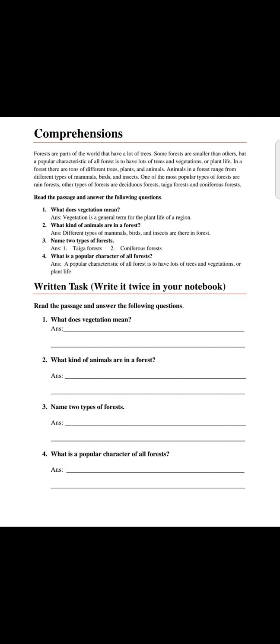After reading this passage you will be able to solve the given questions. Question one: What does vegetation mean? Vegetation is a general term for plant life. What kind of animals are in a forest? Mammals, birds and insects. Name two different types of forests. What is a popular character of all forests? A lot of trees, vegetation and plant life. You have to solve these comprehension passage questions on your spring pack and also two times in your notebook.